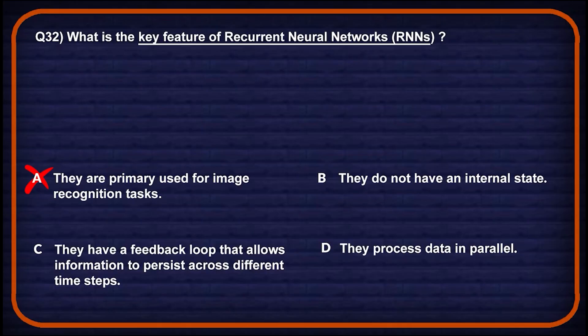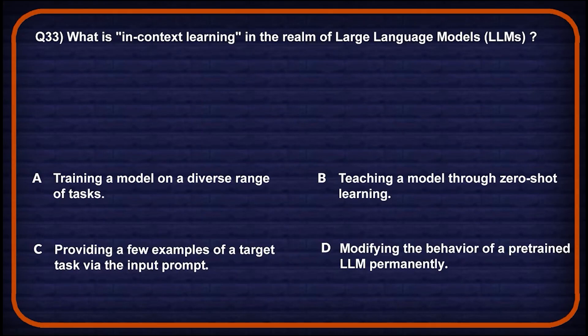Option C: they have feedback loops that allow information to persist across different time steps — RNNs use feedback loops to retain information across time steps, so this might be a potential answer. Option D: they process data in parallel — again the wrong choice. So option C will be the correct one.